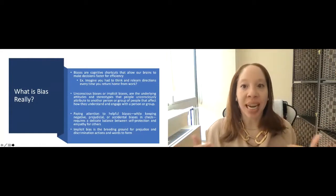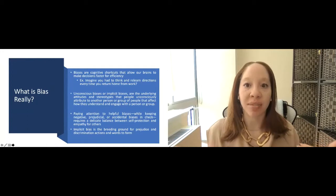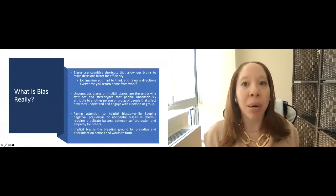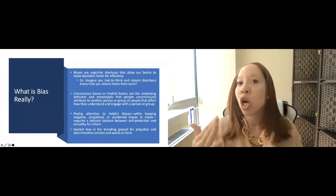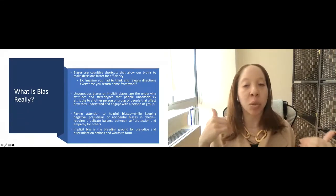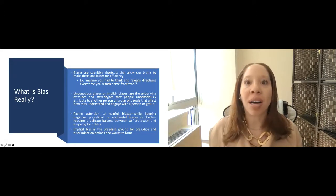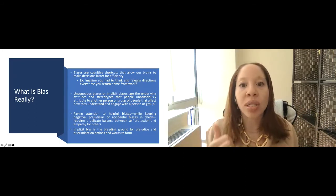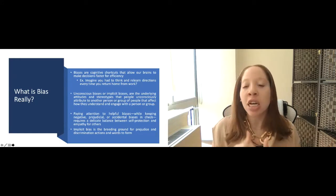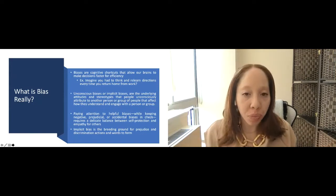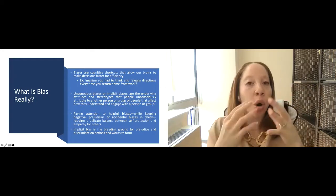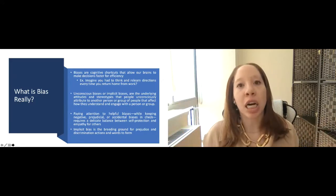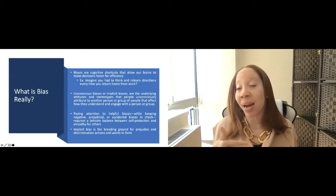So in reality, bias is really a cognitive shortcut that allows our brains to make decisions faster for efficiency. So think about it. Imagine every time you had to go home, you had to look at a map to figure out directions. That would be a nightmare. So our brains automatically, just by the way our brains are, create these cognitive shortcuts, which create a bias. So, for example, us going right instead of left to go home down the street, that is a bias. Unconscious bias or implicit biases really are the underlying attitudes and stereotypes that people unconsciously attribute to another person or group that affect how they understand and engage with that group. And what we need to do with that, knowing that biases are an inherent part of our human function, are an inherent part of our functionality as a human being, we need to understand and know where the line is between a bias that is helpful and a bias that can be very dangerous.